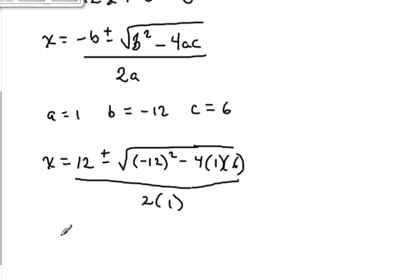Okay, so let's simplify what's on the inside. x equals that positive 12 plus or minus the square root. Now negative 12 squared is a positive 144 minus 4 times 1 times 6 is 24, all over 2.